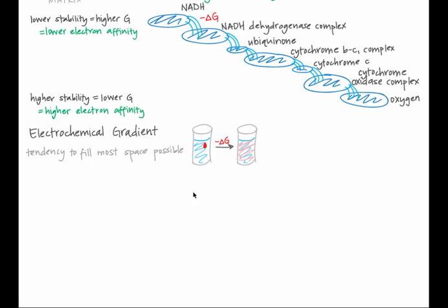There aren't many ways to arrange the food coloring molecules when they're all in the same place. But there are more ways to arrange the food coloring molecules if they are randomly spread out in the entire glass of water. So the diffusion of the food coloring has a positive change in entropy — there's more randomness when the molecules are diffused than when they're all in one drop. This is spontaneous.